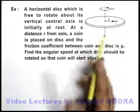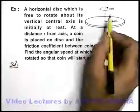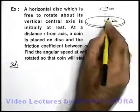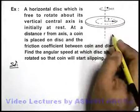In this situation, in the solution we can state when the disc is rotating at an angular speed omega, this coin will start revolving in a circular path of radius r at the same angular speed omega.